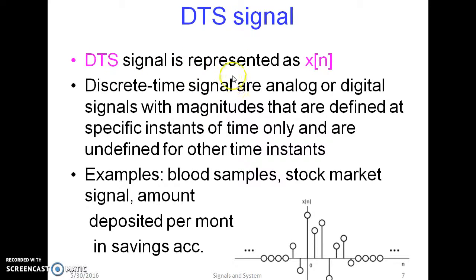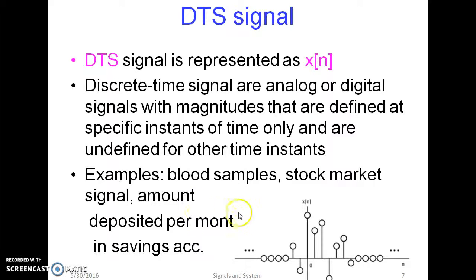A DTS signal is represented as x(n) and is present for some instances of time only, being undefined for other instances. x is the variable and n is the time instant. Examples are blood samples, stock market signal, and the amount deposited in a savings account per month. We can represent x(n) with n on the x-axis and x(n) on the y-axis.